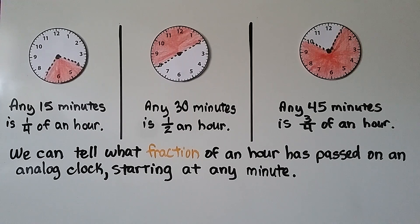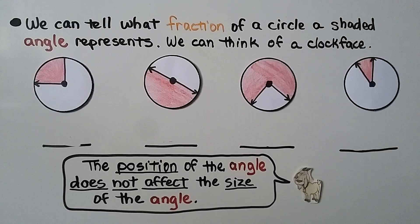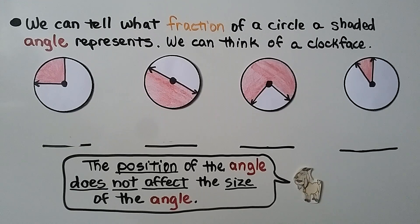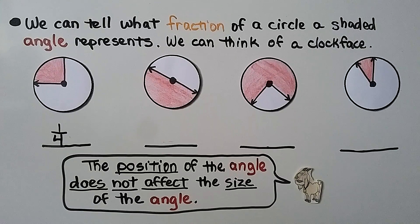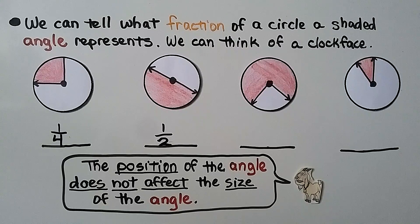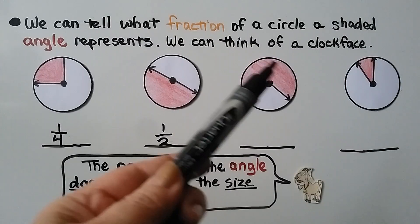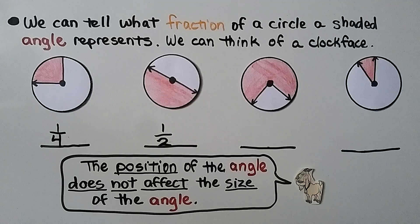We can tell what fraction of an hour has passed on an analog clock starting at any minute, and we can tell what fraction of a circle a shaded angle represents — we can think of a clock face. So what fraction of a circle does this shaded angle represent? If you said one-fourth, you're correct. And what fraction does this shaded angle represent? If you said one-half, you're correct. What about this one? Look at the size of the white part — we're looking for the fraction of the shaded angle. If you said three-fourths, you're correct.